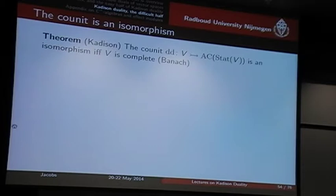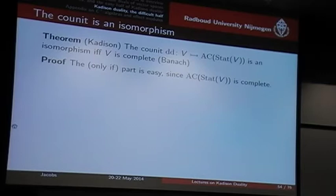Good. It's an isomorphism. This is the main result that can be traced back to Richard Kadison. This is the most complicated part of the whole thing I will be talking about. The only-if part is easy because these affine continuous maps are always complete. So if you have an isomorphism, V is itself complete.